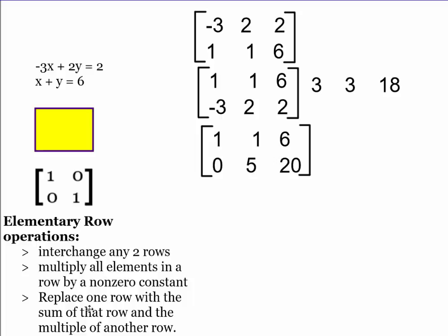And back up here, if I look at my rules, one of them is I can multiply all the elements in a row by a non-zero constant. I'm just going to do this one first.